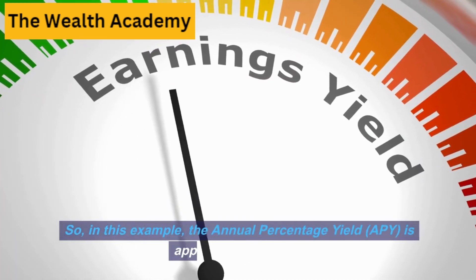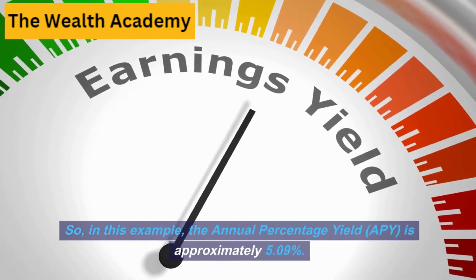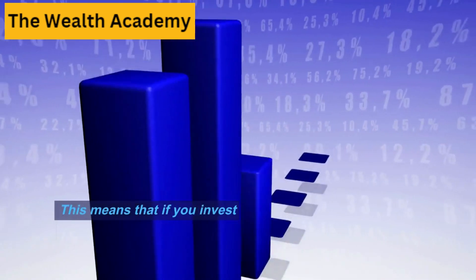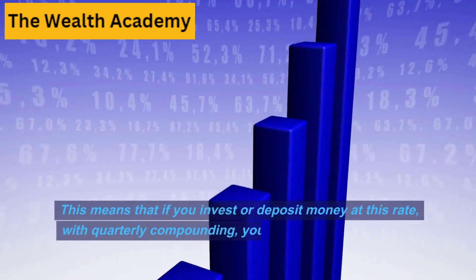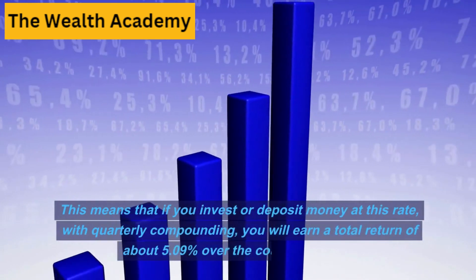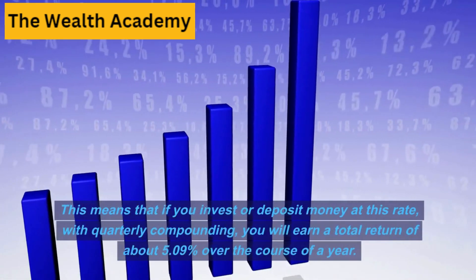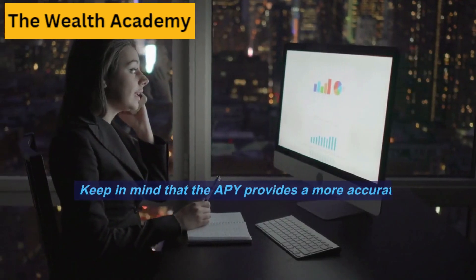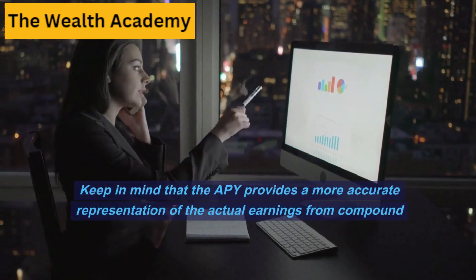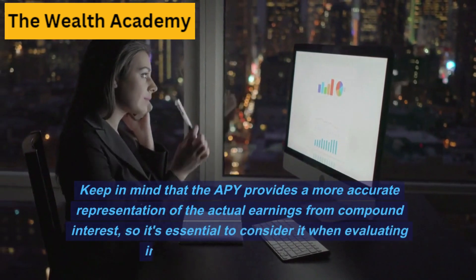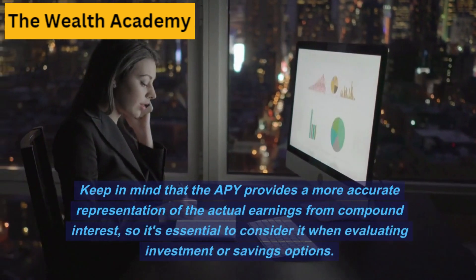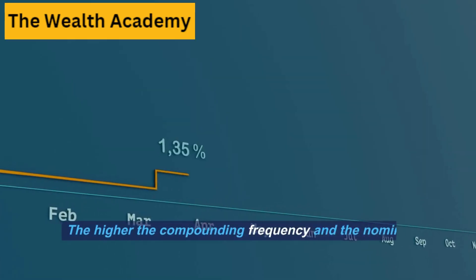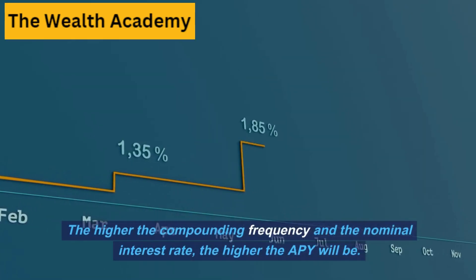So in this example, the annual percentage yield (APY) is approximately 5.09%. This means that if you invest or deposit money at this rate with quarterly compounding, you will earn a total return of about 5.09% over the course of a year. Keep in mind that APY provides a more accurate representation of actual earnings from compound interest, so it's essential to consider it when evaluating investment or savings options. The higher the compounding frequency and nominal interest rate, the higher the APY will be.